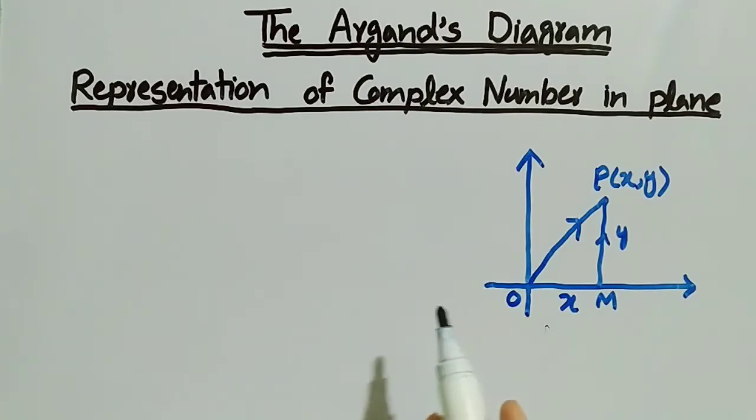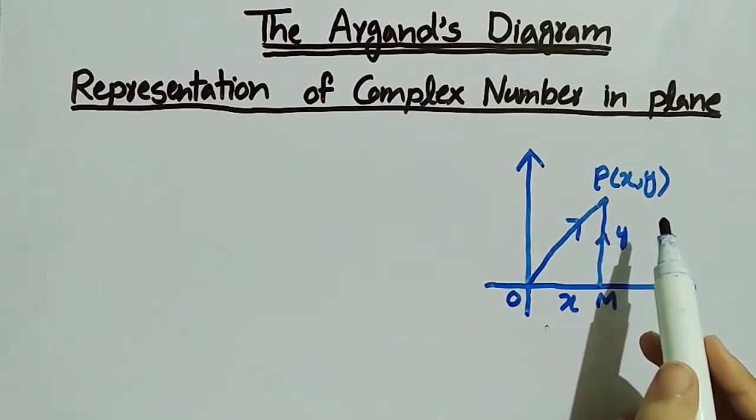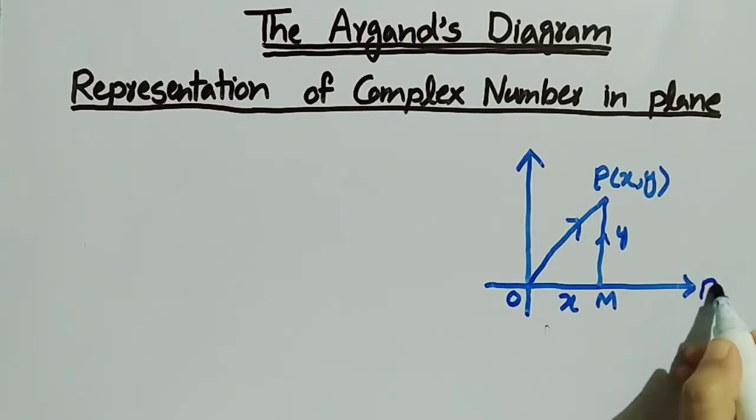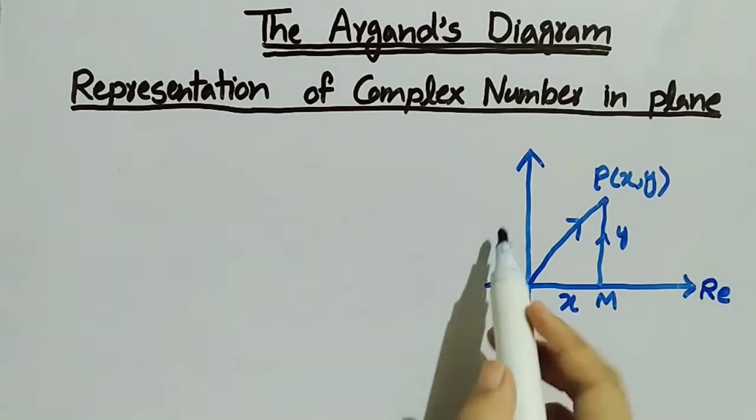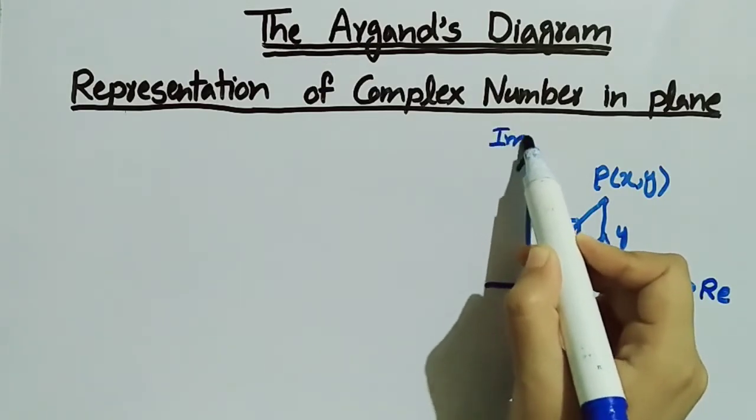Here you can see that the point (x, y) is represented in the complex plane having x coordinate along the x-axis, which is also called the real axis and is represented by Re, and y along the y-axis, called the imaginary axis and represented by Im.